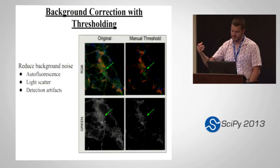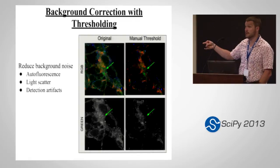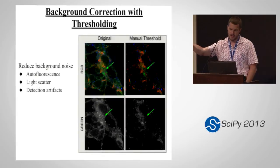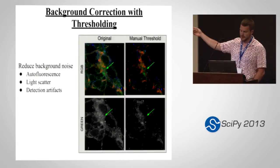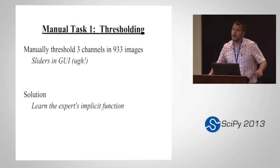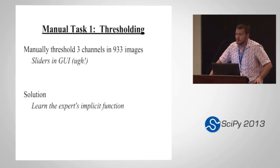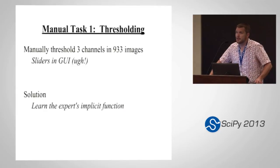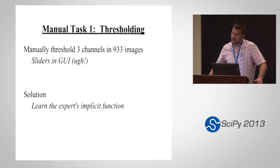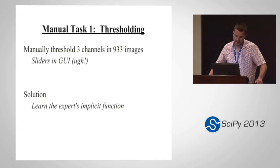We have an extra source of noise in the green channel that needs to be dealt with. The arrows indicate a location with low-level green channel background noise. This is a conference about scientific Python, and how did we end up using it? It turns out that manually thresholding 933 images — the number we developed in the course of our experimentation — on three channels means approximately 2,700 rounds of thresholding, which is not appealing to a biological scientist.